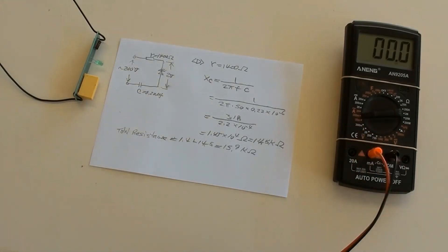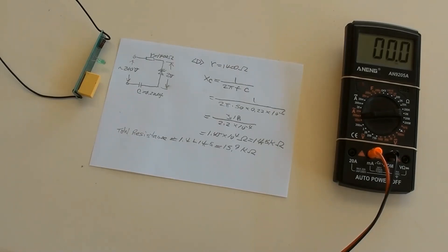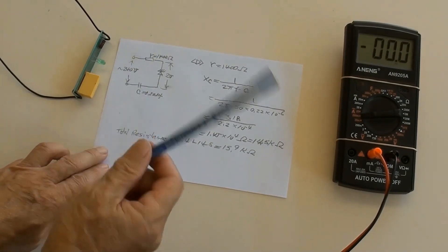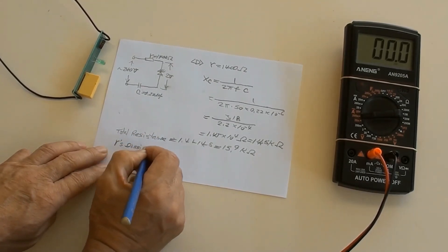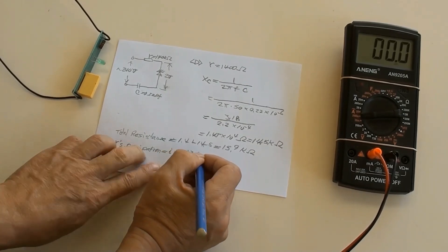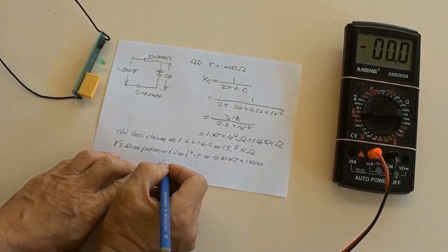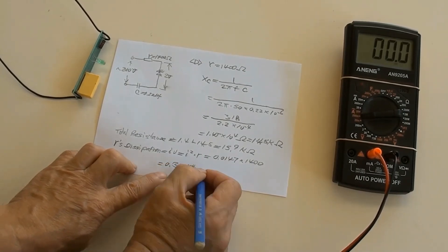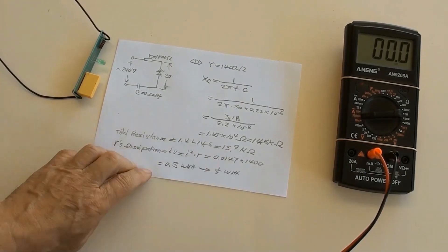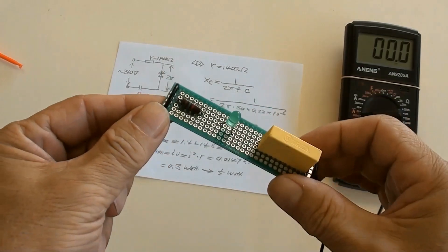A multimeter's AC current function has been connected to the LED circuit with the power supply. Switched power on — the LED lit and 14.7 milliamps was indicated. Switched power off. The resistor's dissipation equals I² × R = (0.0147)² × 1400 = 0.3 watts, so we take its size as a 1.5-watt resistor. The resistor used here is 1.5 watts for 1400 ohms.